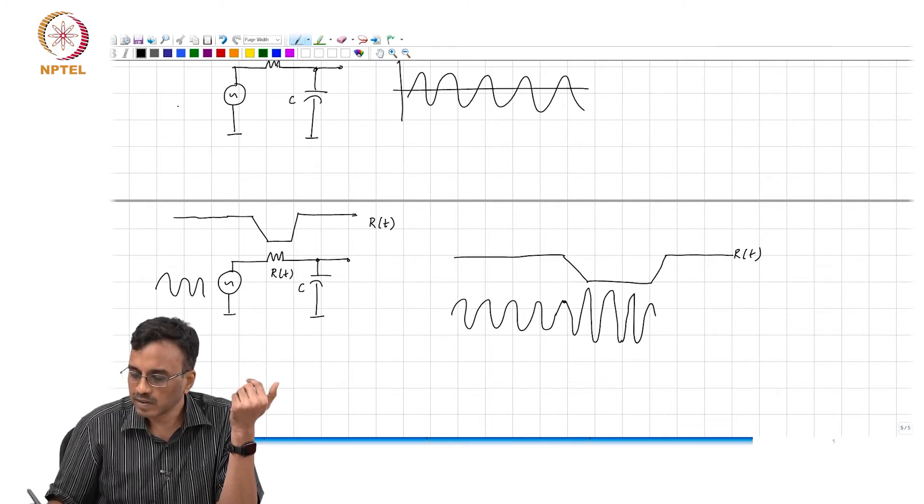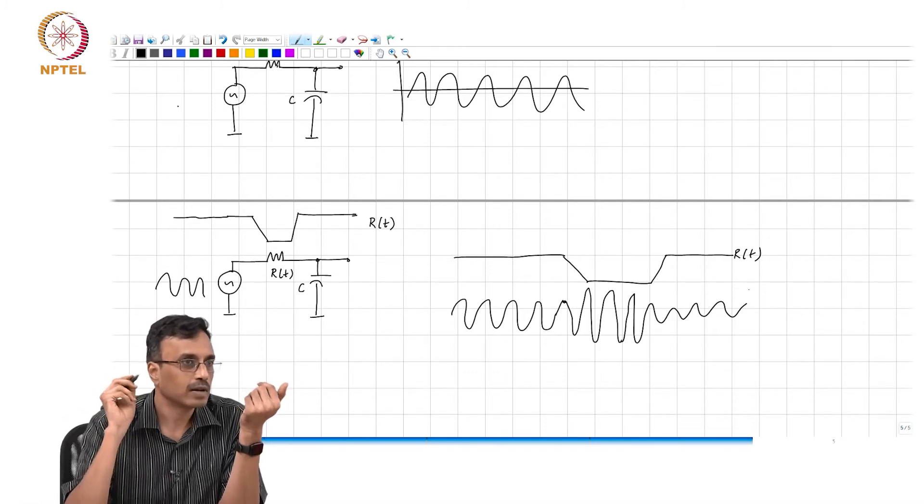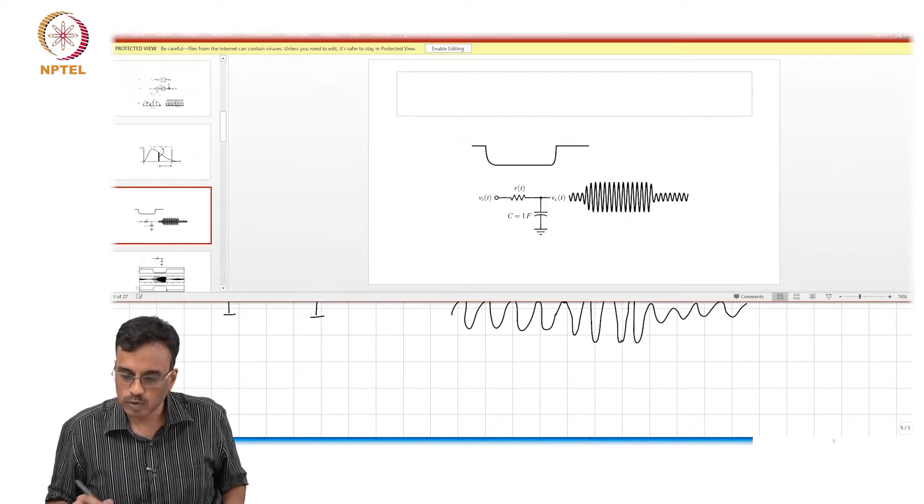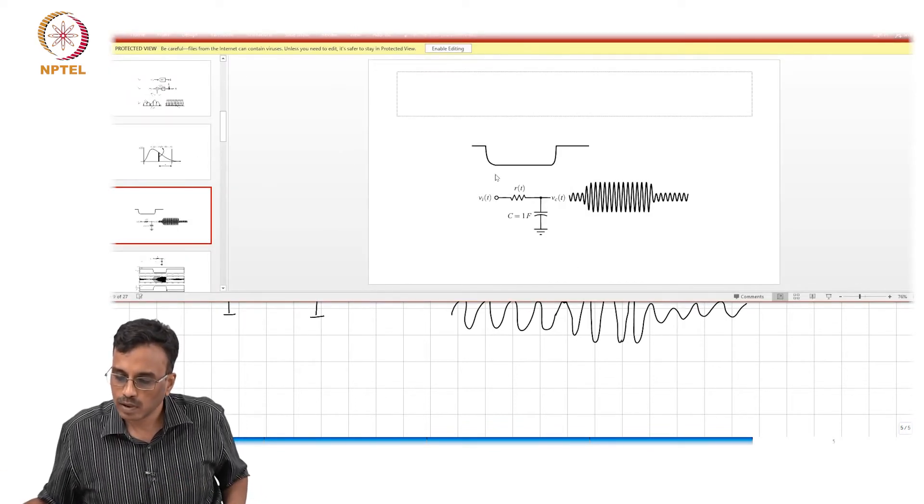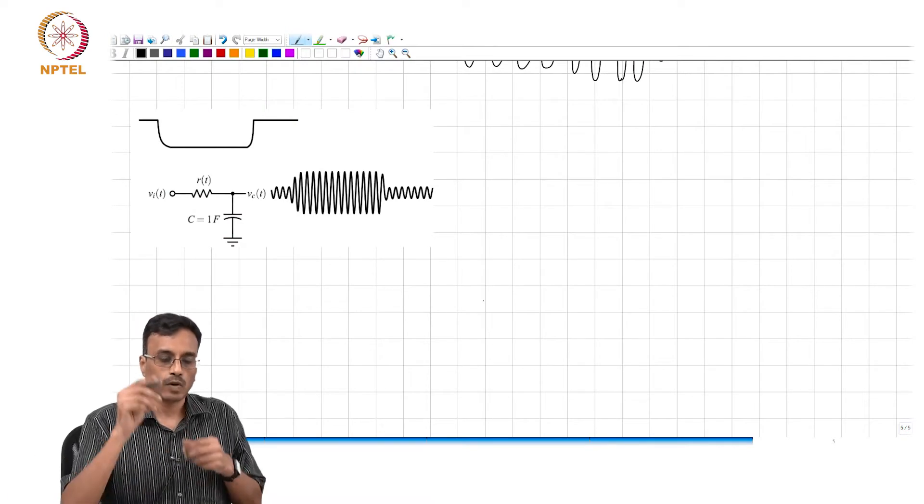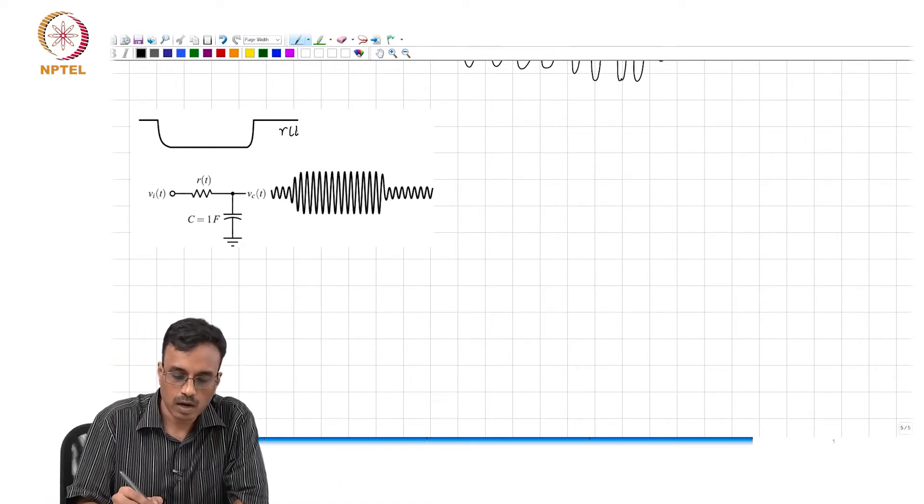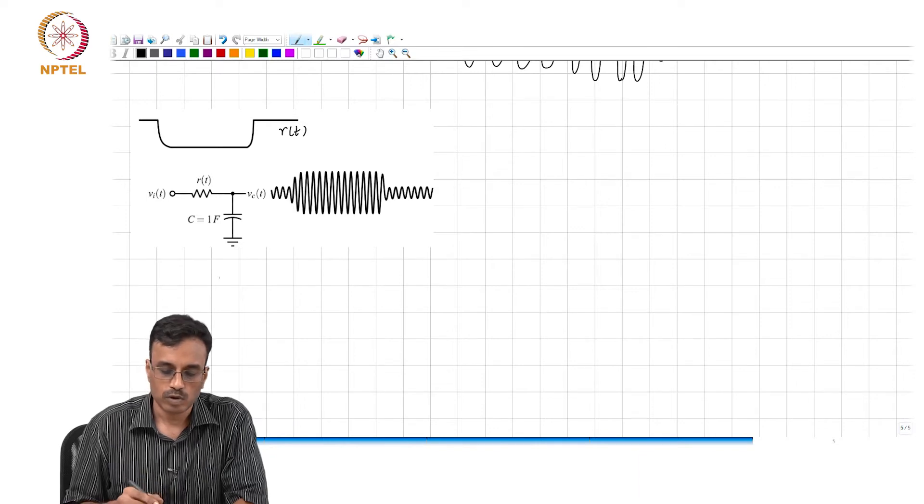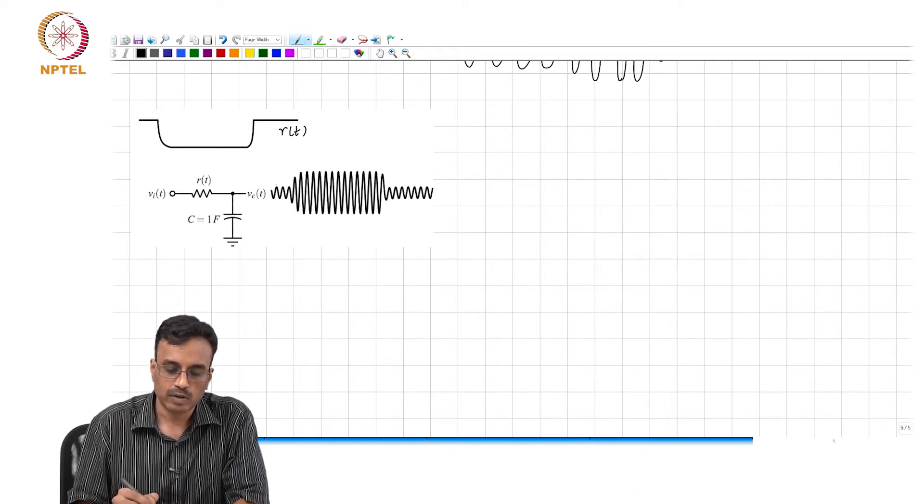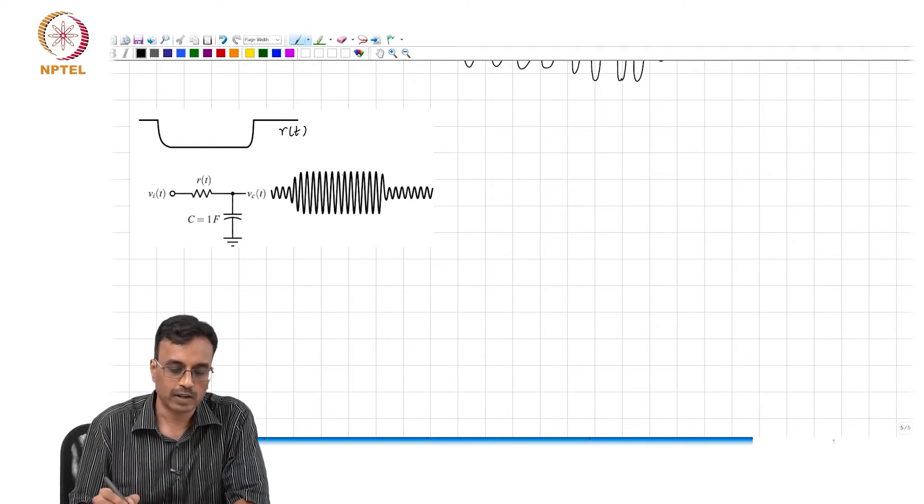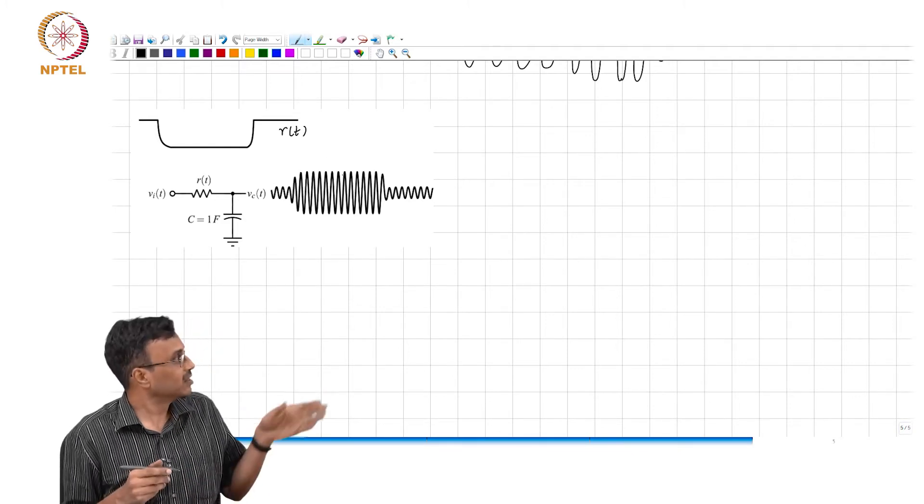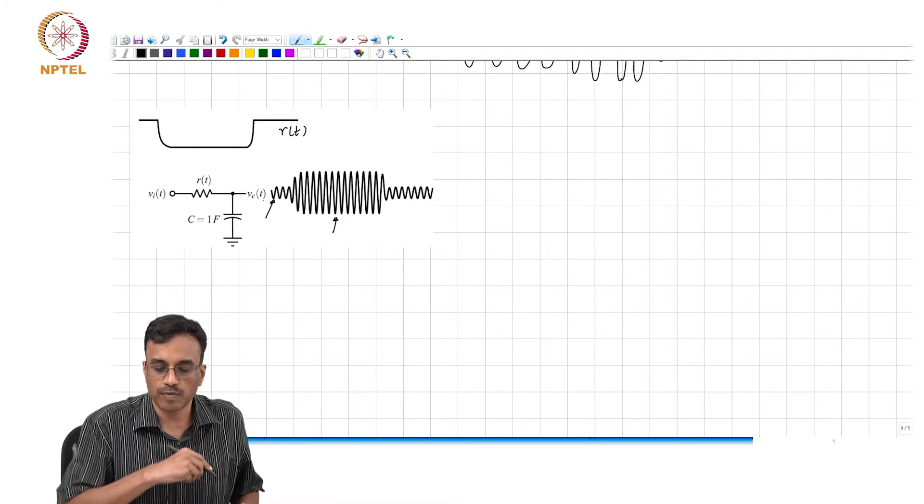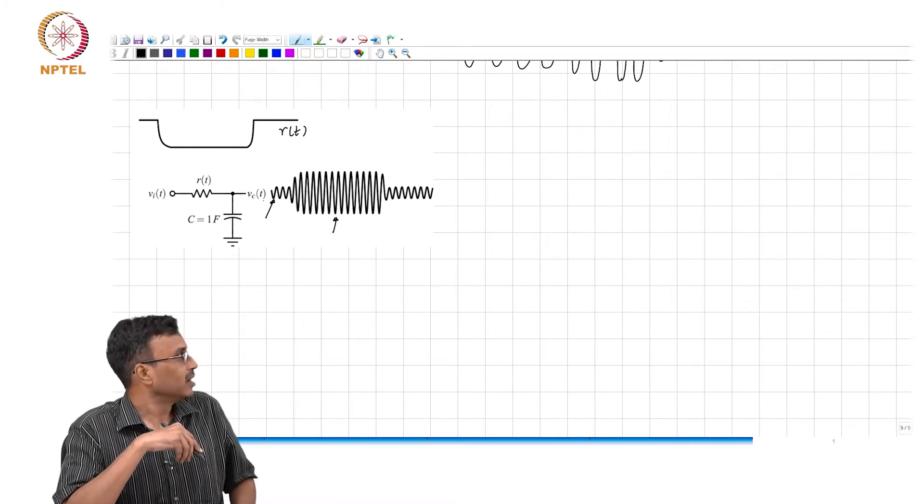You will see something like this and then again it will come back to its old self. Here is an example. This is r of t and when r goes down you expect the bandwidth to increase and therefore the output should be expected to increase. It is not apparent here that the phase shift of this sinusoid with reference to the input is different from the phase shift of that sinusoid.